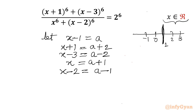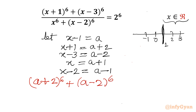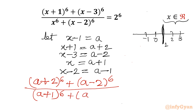Let's put these substitutions in the equation to convert everything into variable a. So (x+1)^6 becomes (a+2)^6, (x-3)^6 becomes (a-2)^6, divided by x^6 which is (a+1)^6, and (x-2)^6 becomes (a-1)^6. The RHS will be 2^6 which is 64.